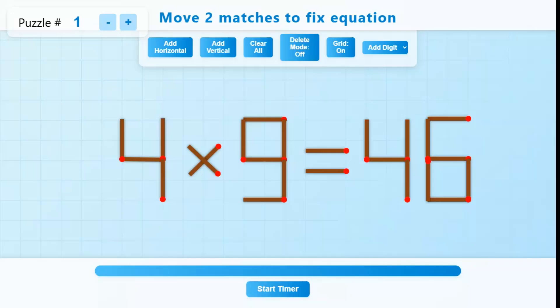Here is this equation written in matchsticks: 4 into 9 is equal to 46. So can you move two matchsticks to fix this equation?